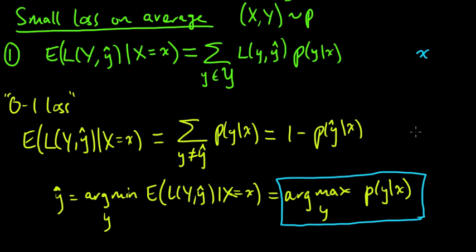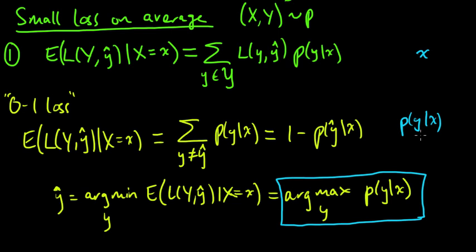The key quantity here is this conditional distribution, p(y|x) — that's the important piece needed to solve this problem.